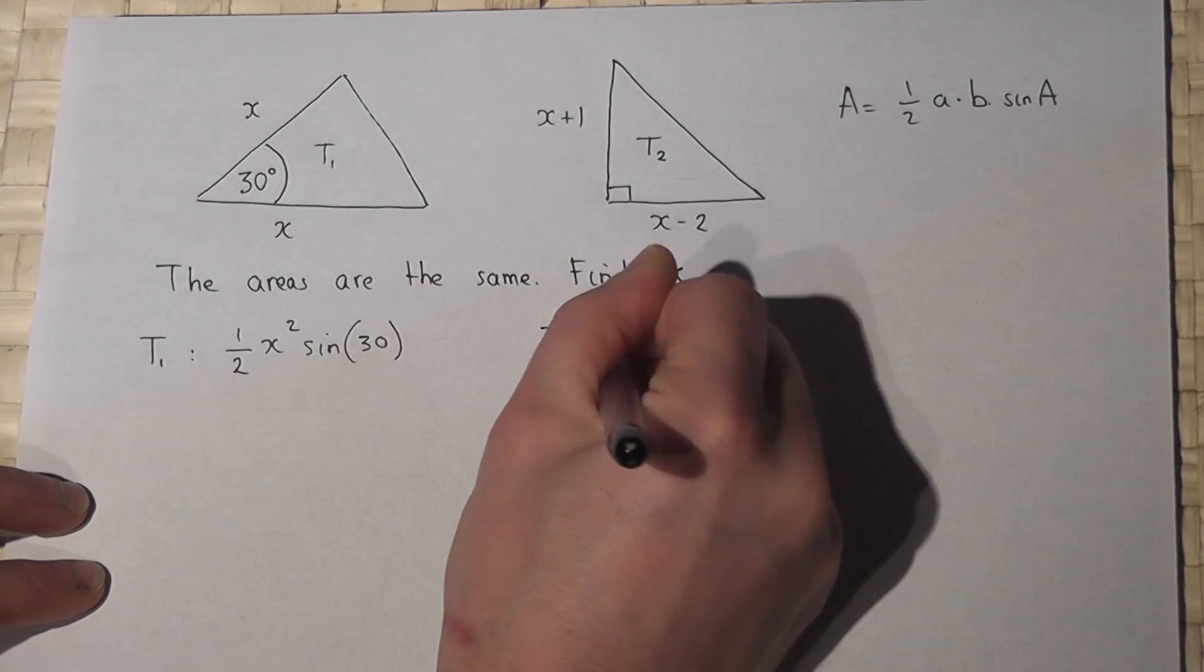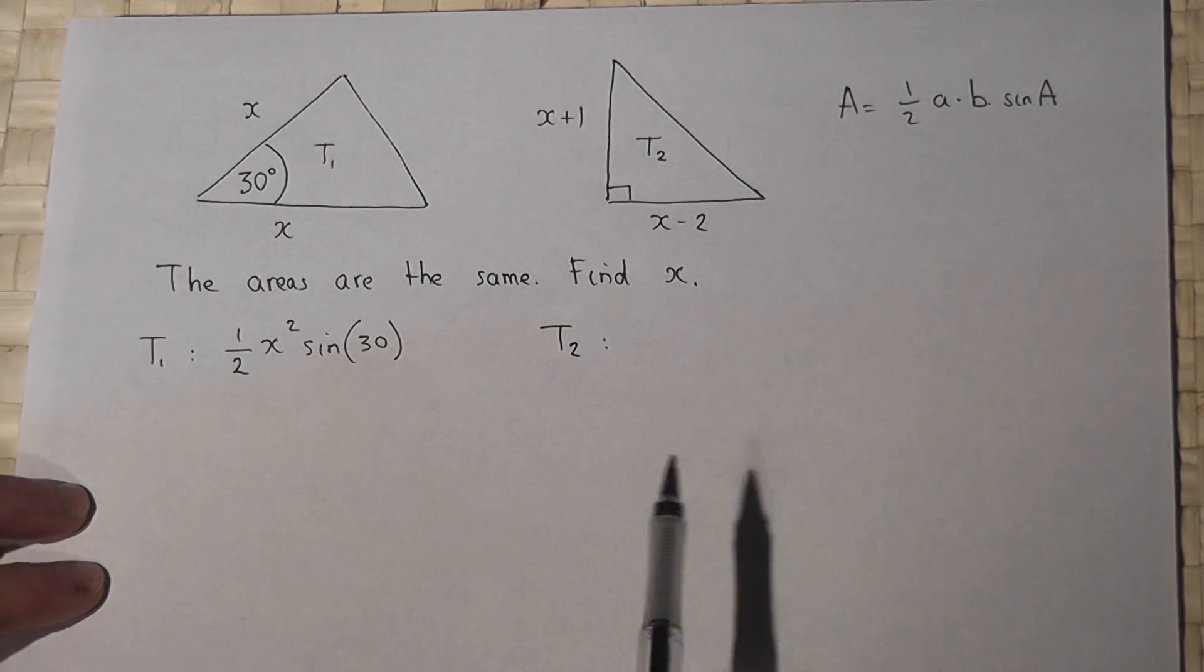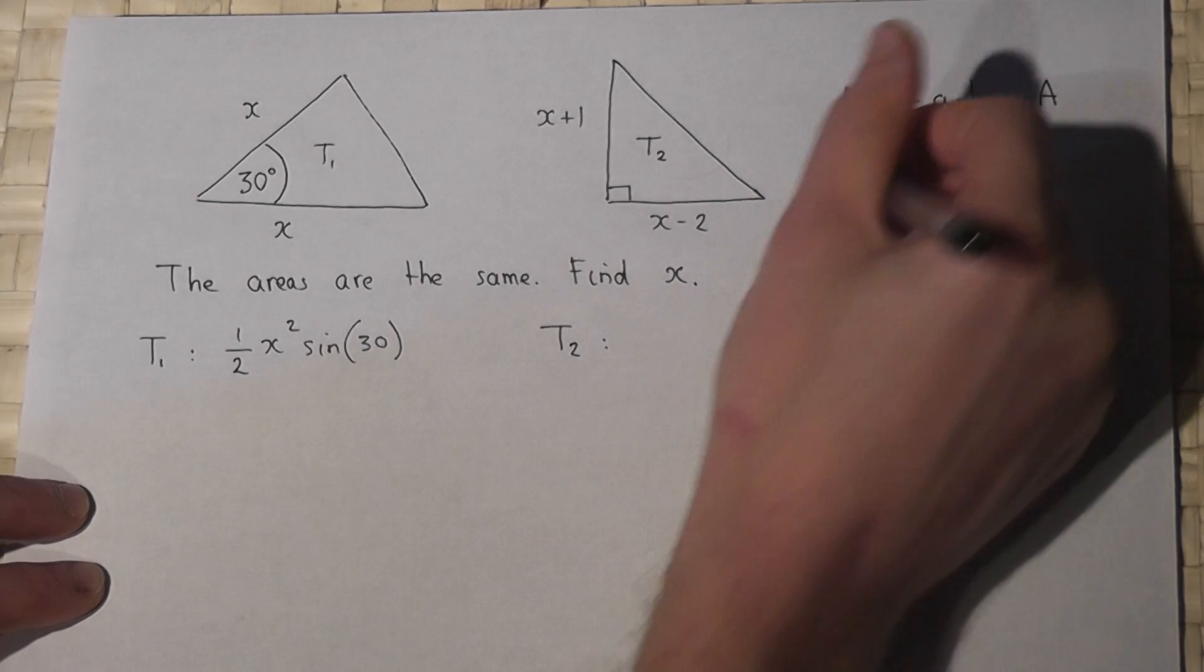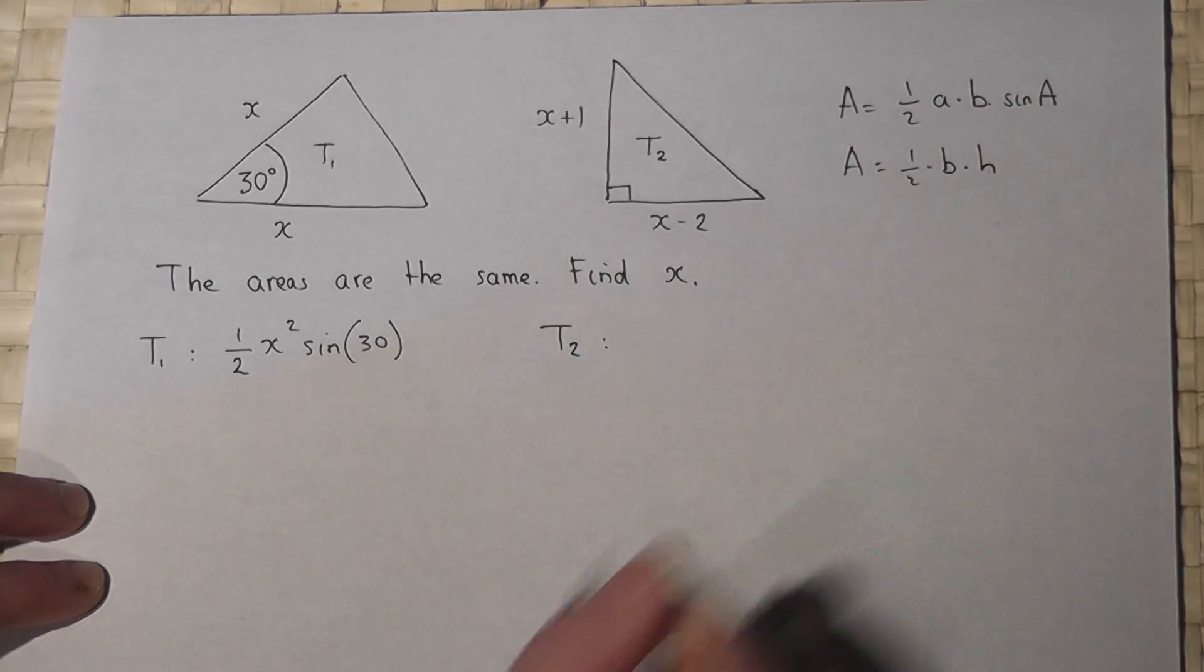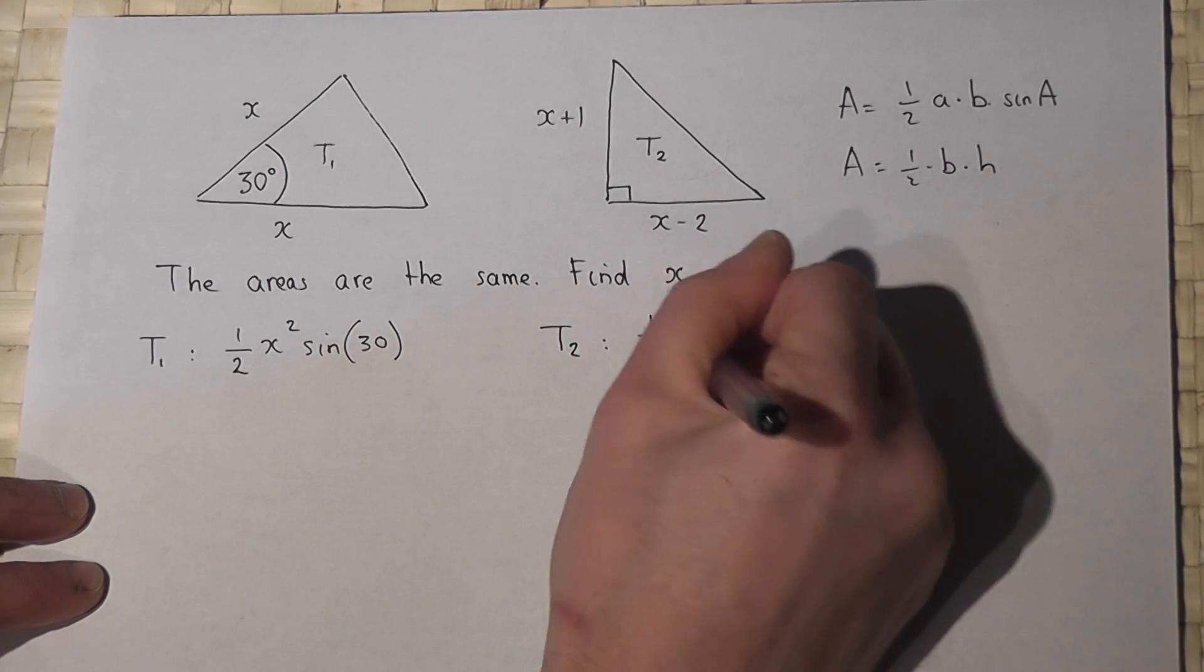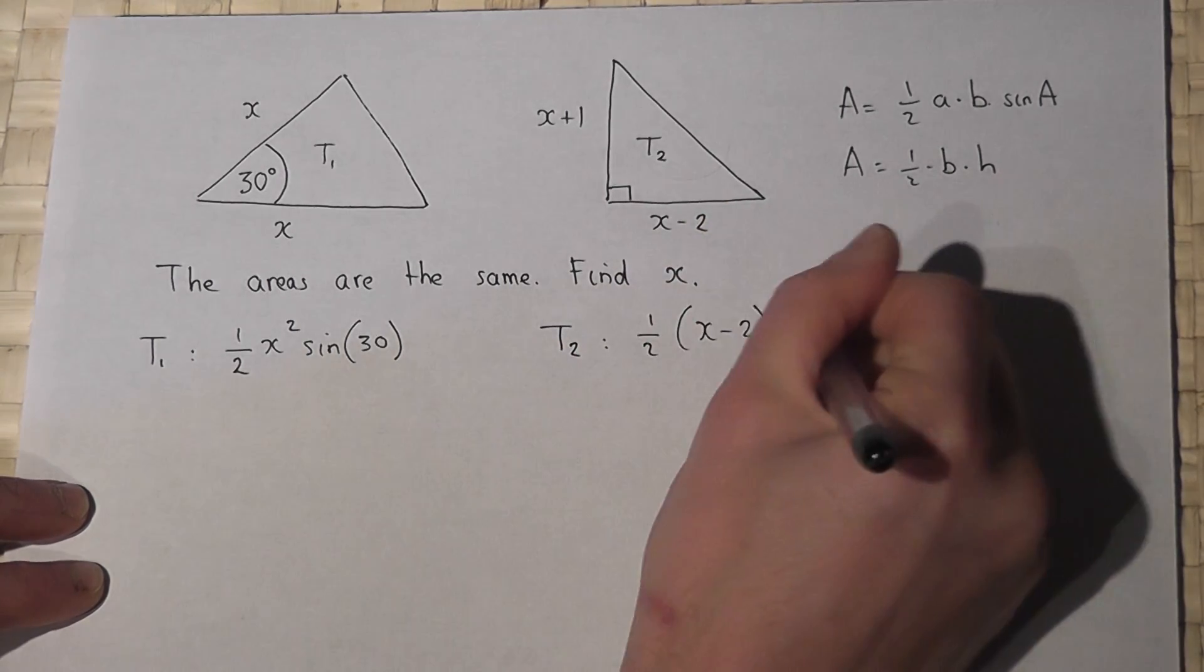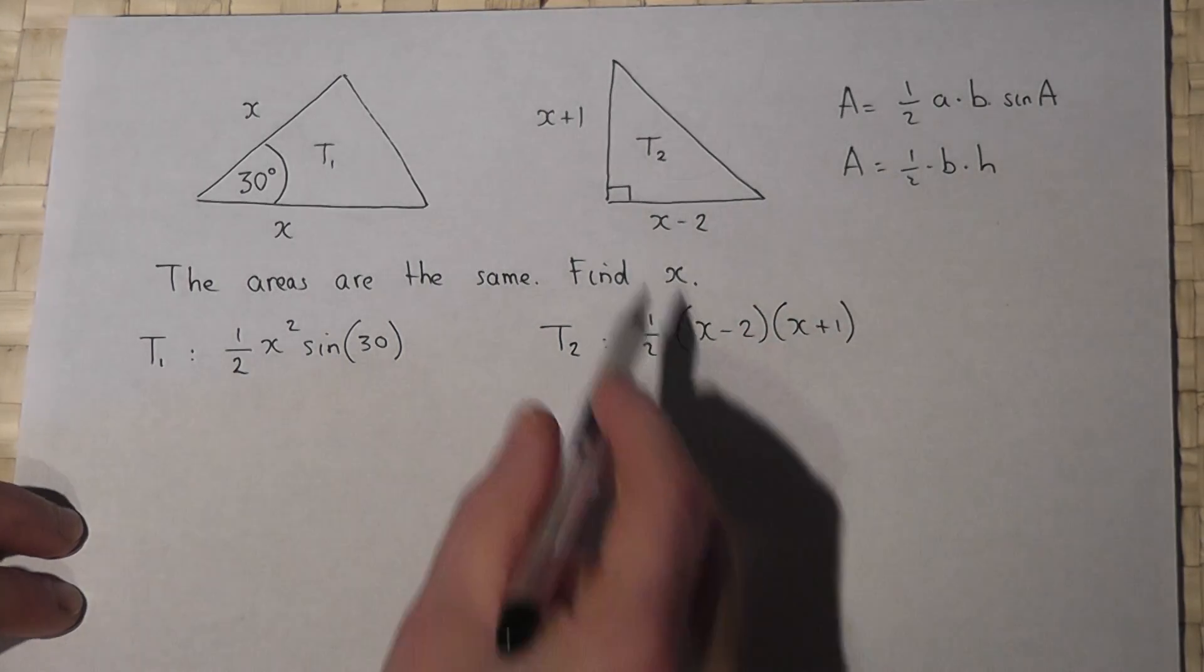Now triangle two is just a fairly routine right angle triangle. So the area is just a half base times height. So this one's got an area of a half times base times height, and that's an expression for its area.